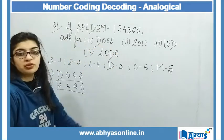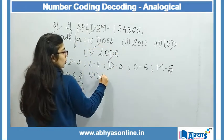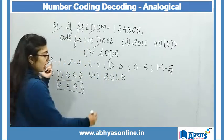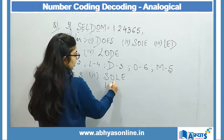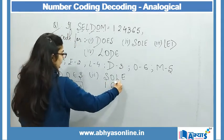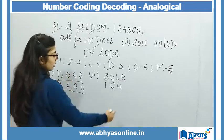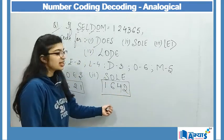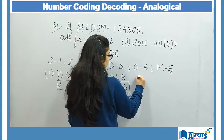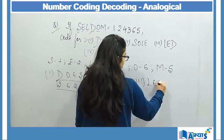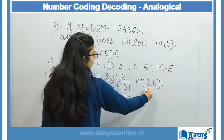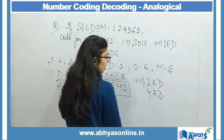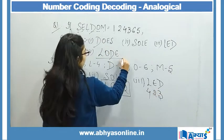Similarly, let's find out the code for the remaining terms. Next is SOL: S's code is 1, O is 6, L is 4, and E is 2 — so SOL is encoded as 1642. For LED: L is 4, E is 2, and D is 3, giving 423. And for LOAD: L is 4, O is 6, D is 3, and E is 2.